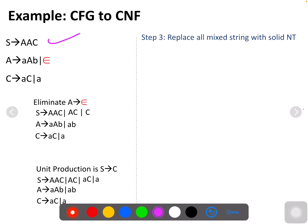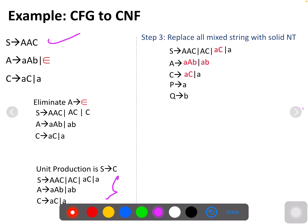Next, replace all mixed strings with solid non-terminal symbols. This is the input. You have to replace all terminal symbols by introducing new variables. I introduce variable P gives a and Q gives b. So the production which had terminal 'a' is replaced by P, giving us PC, then P, then AQ, and PQ.